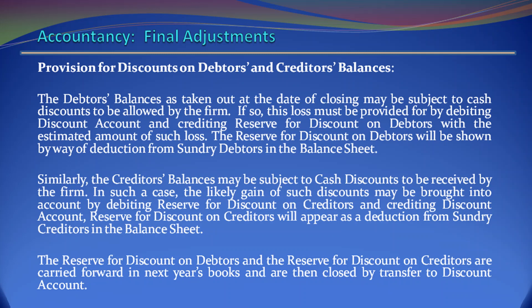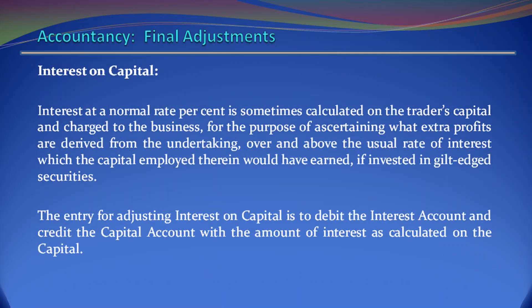The reserve for discount on debtors and reserve for discount on creditors are carried forward in the next year's books and then closed by transfer to discount account. Interest on Capital. Interest at a normal rate percent is sometimes calculated on the trader's capital as a charge to the business for the purpose of ascertaining what extra profits are derived from the undertaking, over and above the usual rate of interest which the capital employed therein could have earned if invested in gilt-edged securities. The entry for adjusting interest on capital is to debit the interest account and credit the capital account with the amount of interest as calculated on the capital.